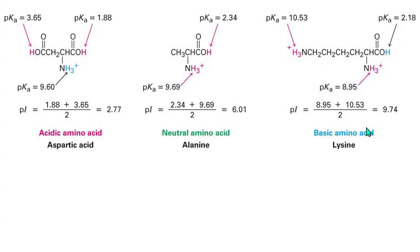That is how we get the pI for basic amino acids, acidic amino acids, and neutral amino acids. These are the three situations. Thank you. Please subscribe to the channel.